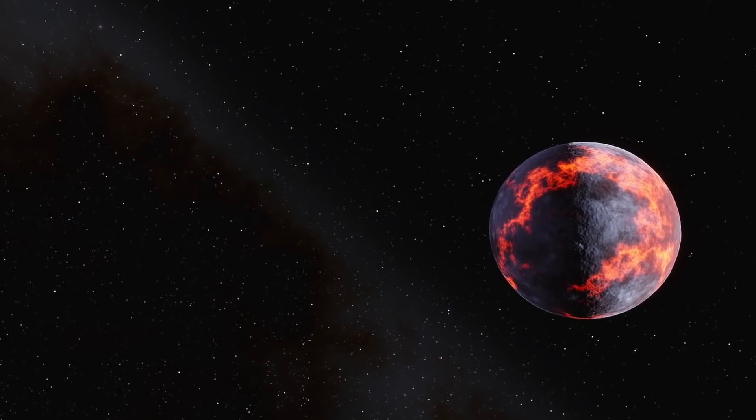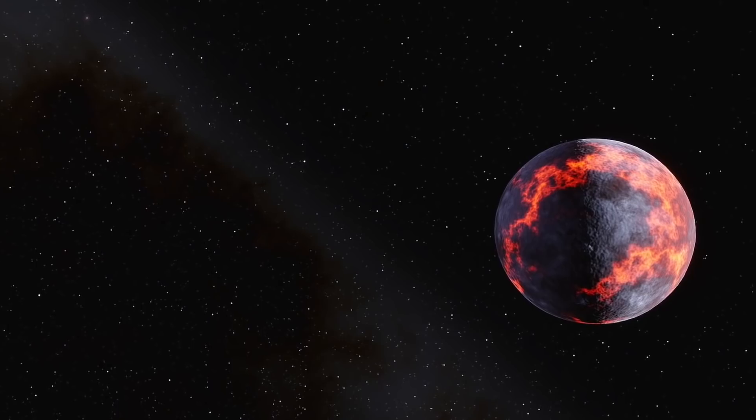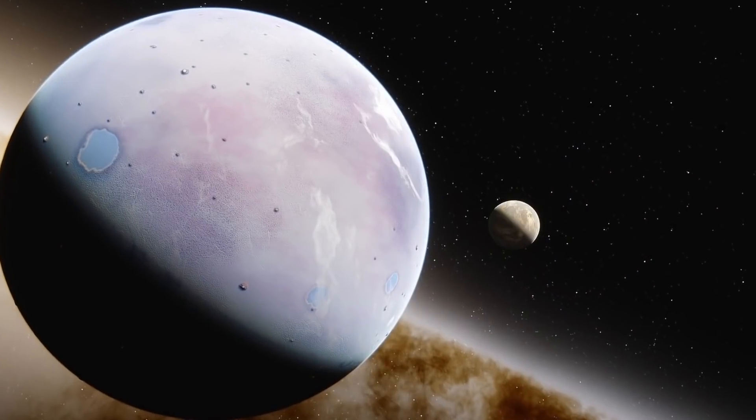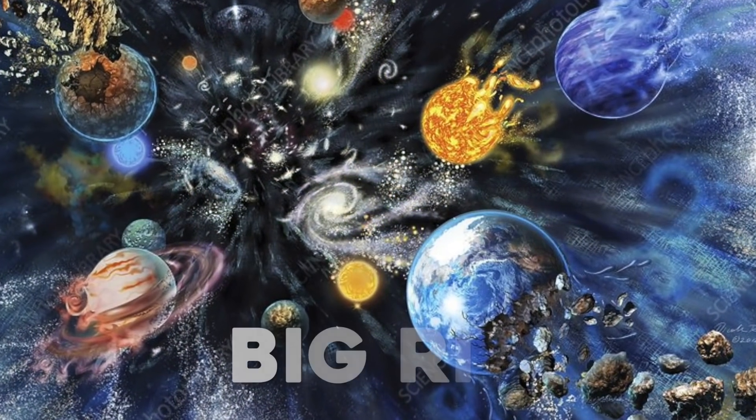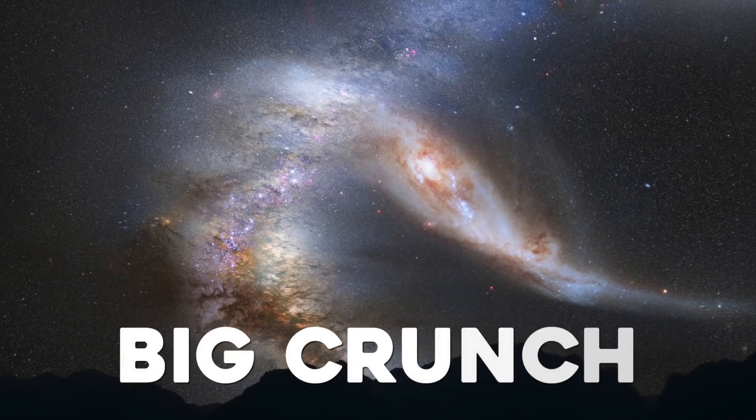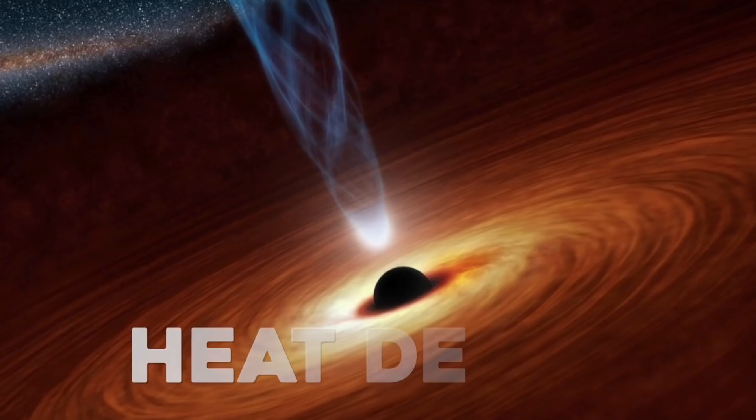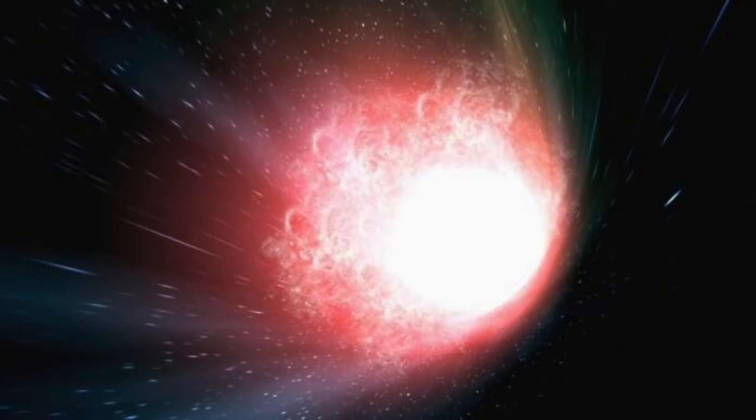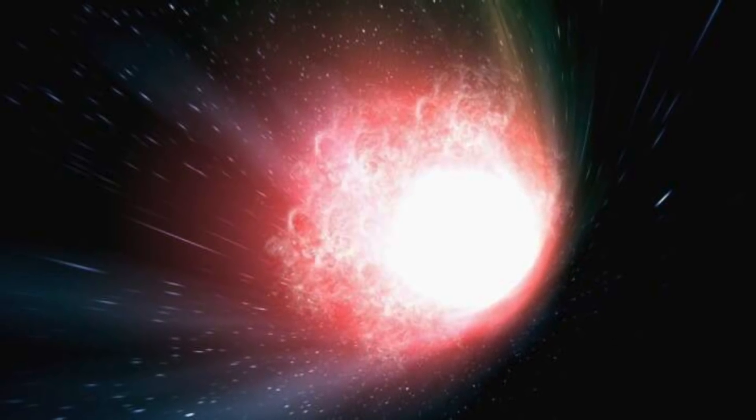Along with the when, there's also the how, with various theories circulating concerning the universe's unavoidable end. These theories consist of the big rip, the big crunch, and the big bounce, heat death, and the big slurp. Of all these theories, the big slurp is the more recent theory that has come to light.